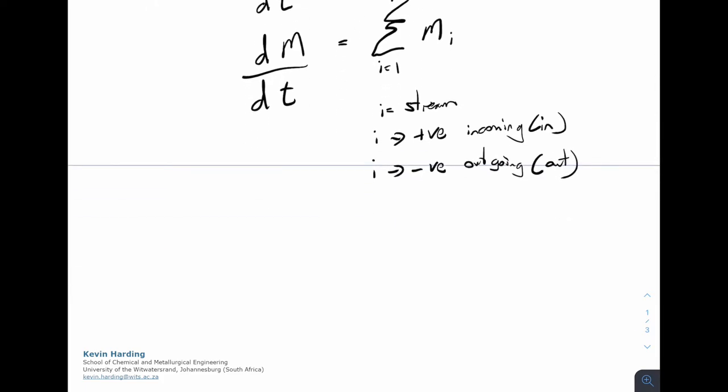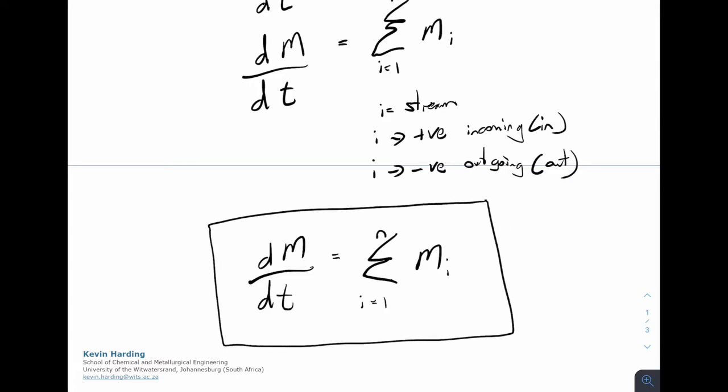So writing that neatly, from now on, if we refer to a mass balance, please use dm/dt is equal to the sum of mi, for i is equal to 1 to n, as our one and only form of the mass balance.